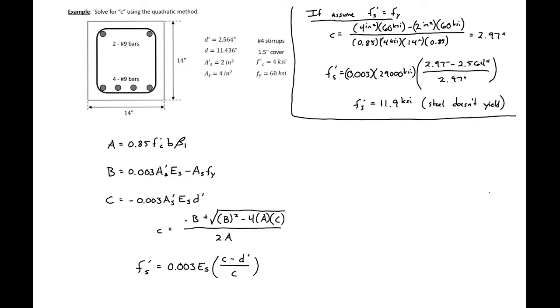We can now use the expressions that we derived on the previous page to solve for c in this example using the quadratic method. First we need to find out if we need to use the quadratic method, and we do this by seeing if our compression steel yields.